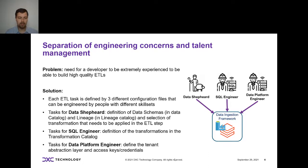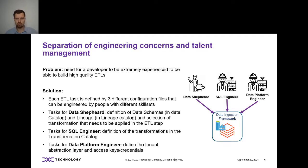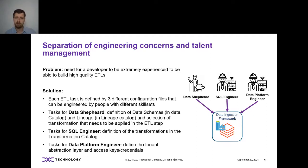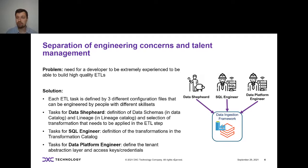What we did when we built our data ingestion framework is structure it so there are three types of config files you need to provide to create a job, specifically designed so people with narrow expertise can start working immediately. The first type is for the data shepherd — a functional analyst who understands the business context and data but not the underlying technology. They understand things like: to build a report I need to join the order table and customer table and do some transformations. They provide the schema and lineage.